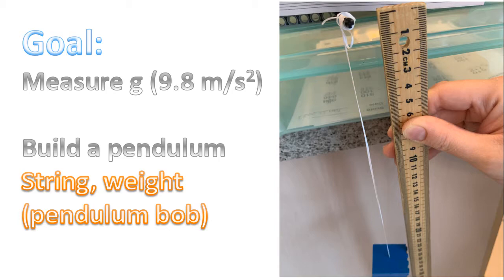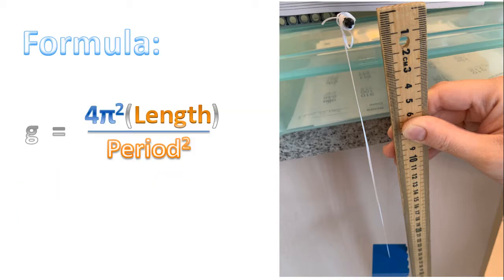The weight is known as the pendulum bob. So it's the Lego seen there. That's the pendulum bob. So the formula we'll be using today in order to determine the acceleration due to gravity is the following.